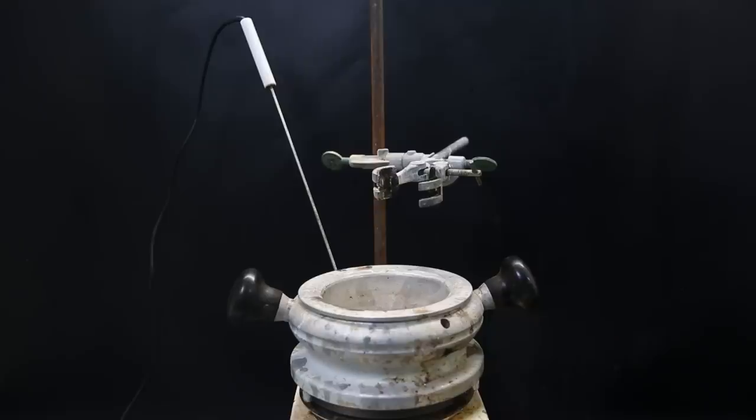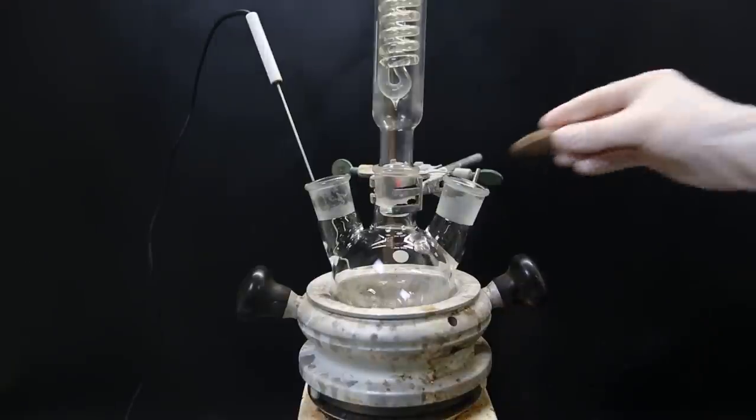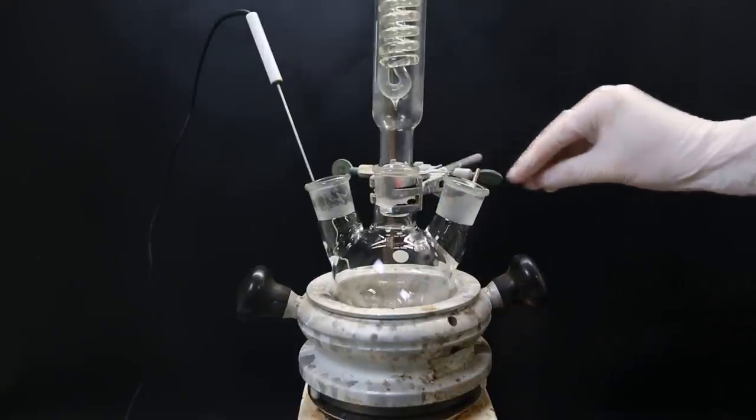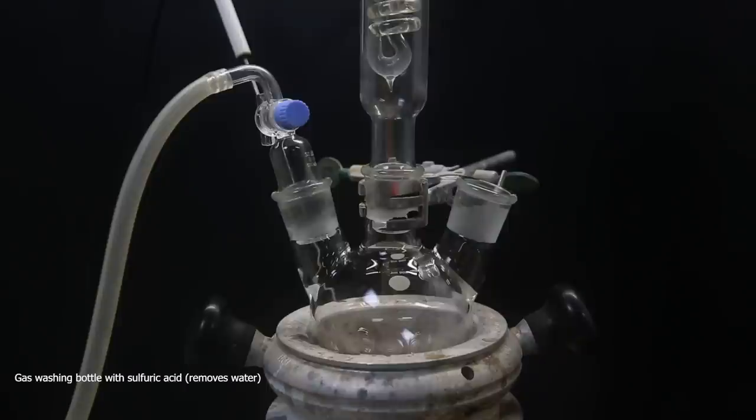So to get started, I set up a heating mantle and put in a 500ml three-neck flask, which I dried beforehand using a heat gun. I attached a dimroth condenser and then add in a stir bar. Now I attach a gas adapter to the left neck that I connected to a gas washing bottle that contains sulfuric acid, which in turn is connected to a nitrogen cylinder.